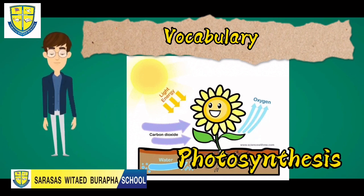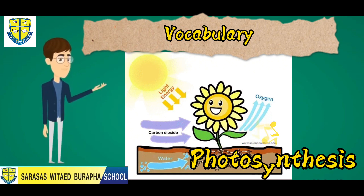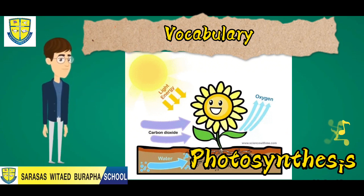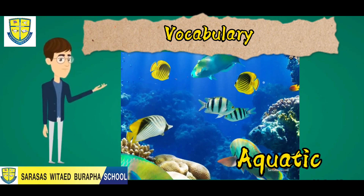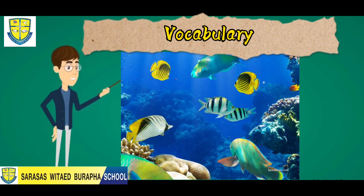Let's start with our first word: photosynthesis. Now let's spell the word photosynthesis: P-H-O-T-O-S-Y-N-T-H-E-S-I-S. Photosynthesis.